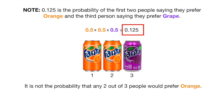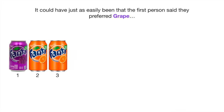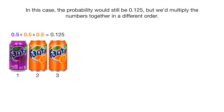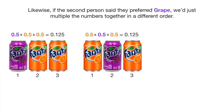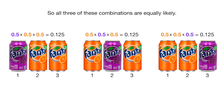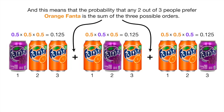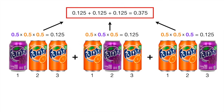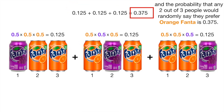It is not the probability that any two out of three people would prefer orange. It could have just as easily been that the first person said they preferred grape — the probability would still be 0.125, but we'd multiply the numbers in a different order. Likewise, if the second person said they preferred grape, we'd just multiply in a different order. So all three of these combinations are equally likely, meaning the probability that any two out of three people prefer orange Fanta is the sum of the three possible orders. So we add the three probabilities together, giving us 0.375.